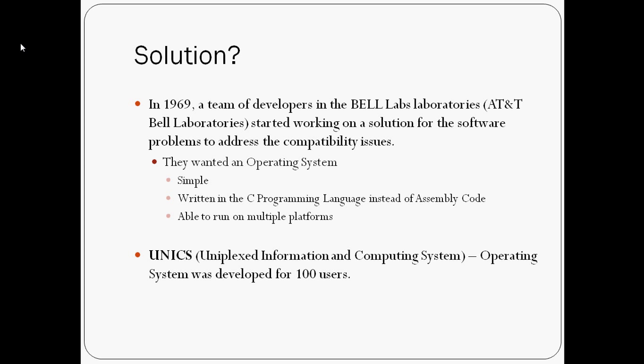The operating system before UNIX was called Multics, which could only handle two users at a time. So compared to Multics, UNIX was a big improvement. However, there were still many problems with UNIX. First of all, it was written in assembly language, which caused many obstacles, and 100 users at a time was still not enough for system makers. So system makers were still not happy with the results.